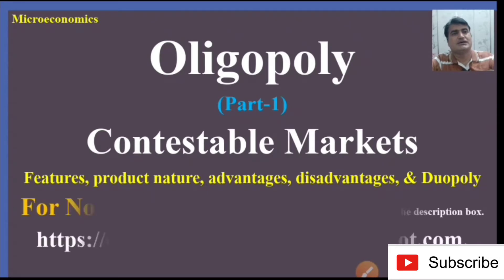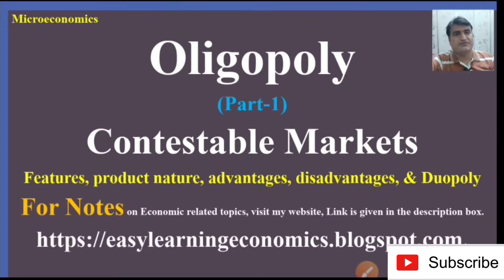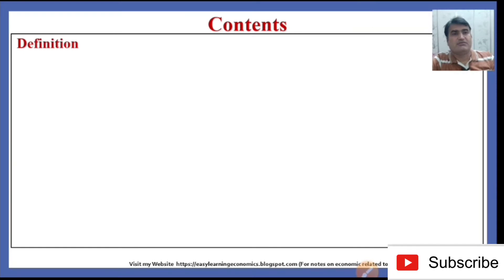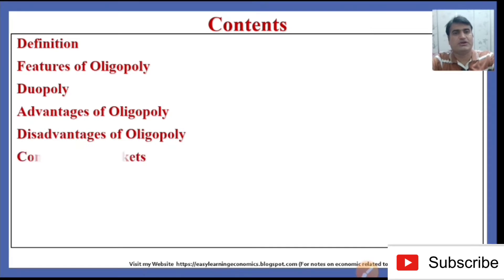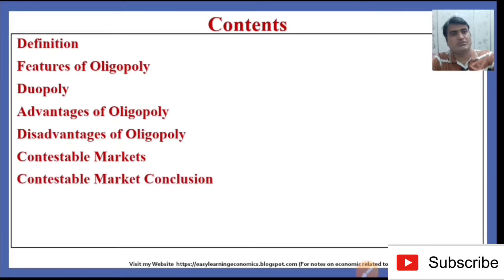As we know that Oligopoly has different forms: contestable market, collusive market, price leadership, tacit collusion, cartel, or ring arrangements. Here we are going to discuss only the Oligopoly Contestable Market, covering what is Oligopoly, its features, what is Duopoly, the advantages and disadvantages of Oligopoly, and what is Contestable Market and Contestable Market concurrence. These are the lecture contents for today.